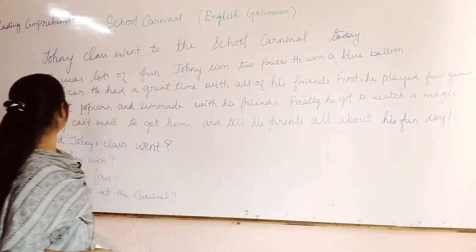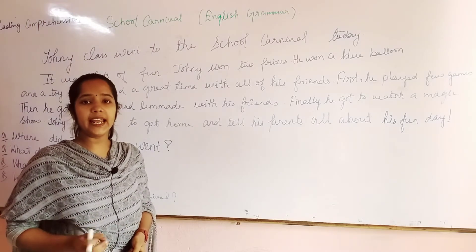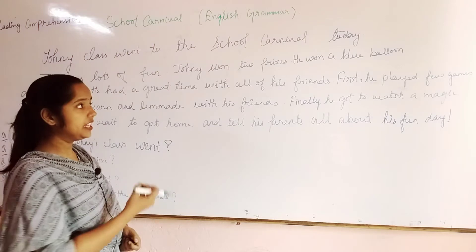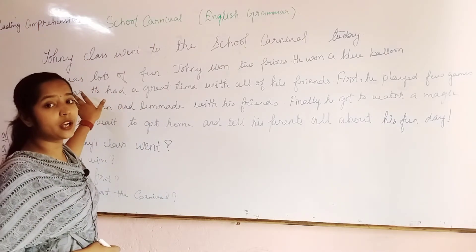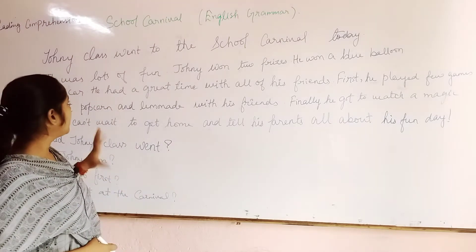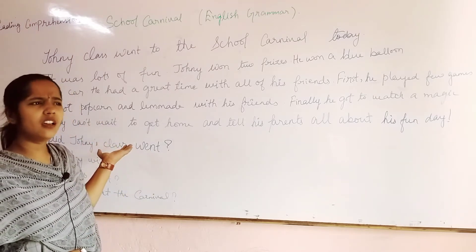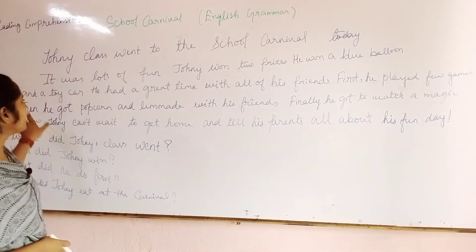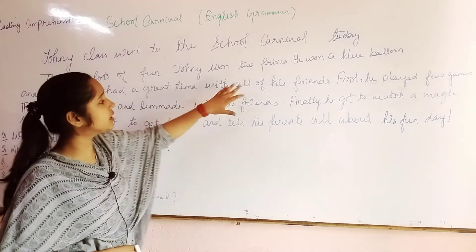He won a blue balloon and a toy car. If you win any of the prizes — here Johnny wins a blue balloon and a toy car. What is a toy car? You know, like khilona-type things. You have seen toy cars, I am sure.